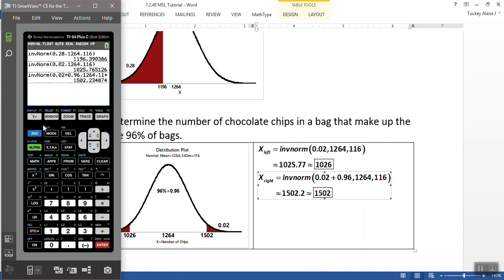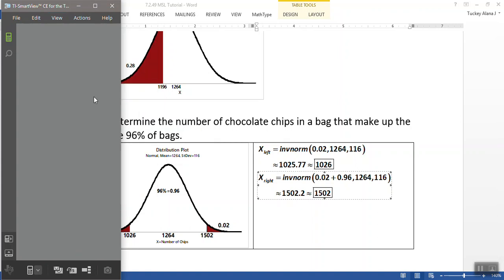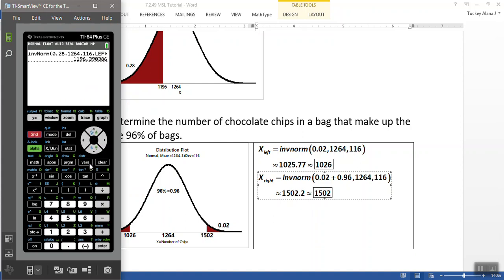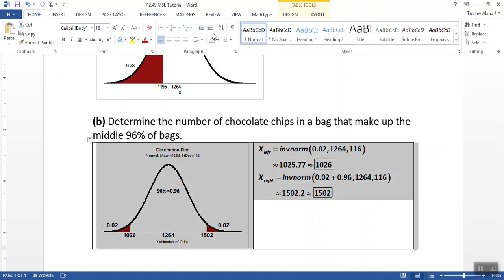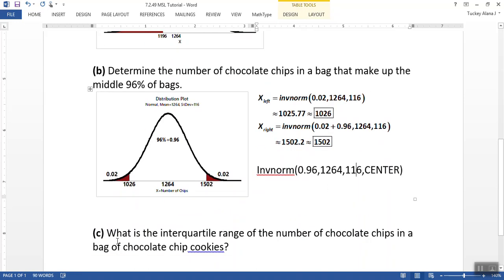Now the newer calculators, it's a little bit different. If you don't have this calculator, you can kind of skip through this real quick. But you go to distribution, you pick inverse norm. You actually have the center option. So what you can do is you can tell it I've got 0.96 in the center. Go down here, choose center, and then when you go to paste, press enter, and it'll actually give you both values: 1025.7 on the left, 1502.2 on the right. That new calculator is really nice because it makes things a little bit easier. So if you're going to put that into your calculator, you would say inverse norm, 0.96, 1264, 116, center. And that's what you would write to show that you did your work.